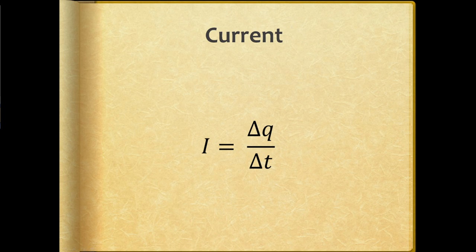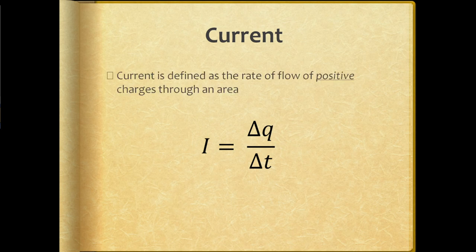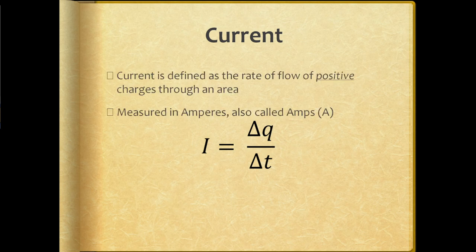Electric current is a term that is a common enough part of the English vernacular. We call it electric current because it does involve the flow of something, like how the current of a river involves the flowing of water downstream. Electric current is the flow of electrons. They all have to move from point A to point B, and as they're all moving together in a direction, that movement, that flow, is electric current.